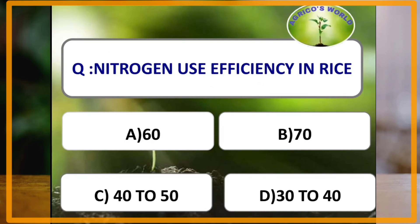Nitrogen use efficiency in rice: normally plants have a nitrogen use efficiency of 70%, but rice plants have a lower nitrogen use efficiency of only 30 to 40%.